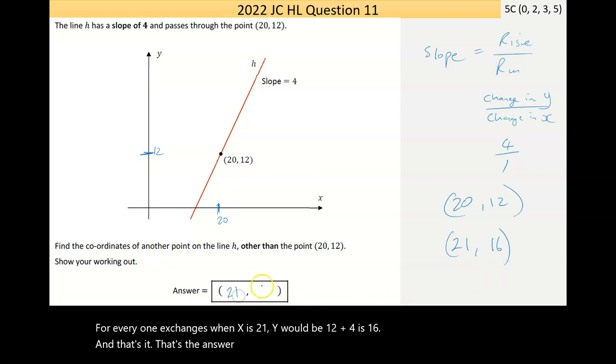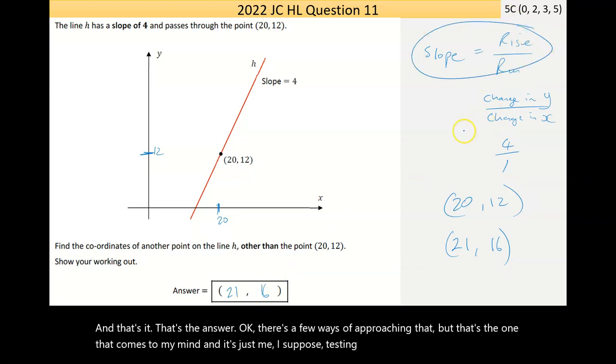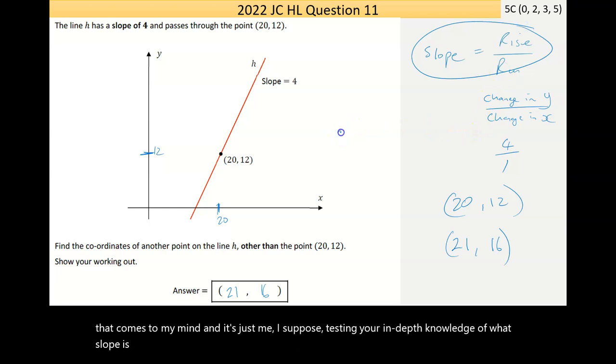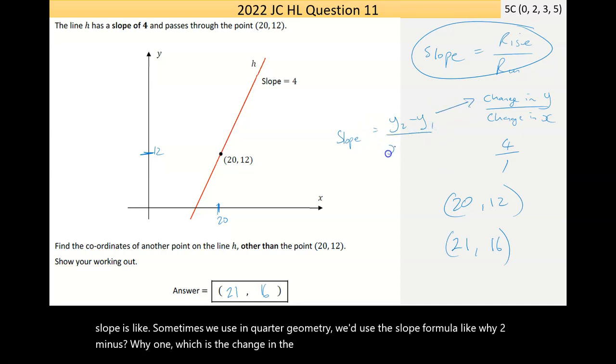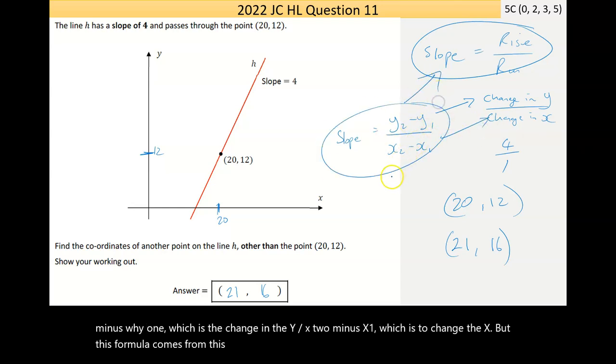There's a few other ways of approaching that, but that's the one that comes to my mind. It's just, I suppose, testing your in-depth knowledge of what slope is. Sometimes we use, in coordinate geometry, the slope formula, like y2 minus y1, which is the change in the y, over x2 minus x1, which is the change in the x. But this formula comes from this concept.